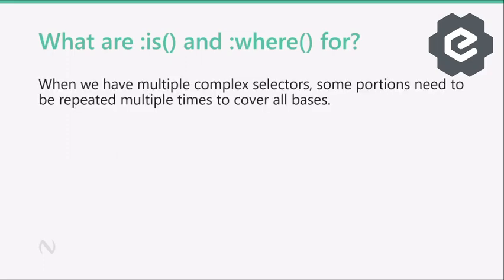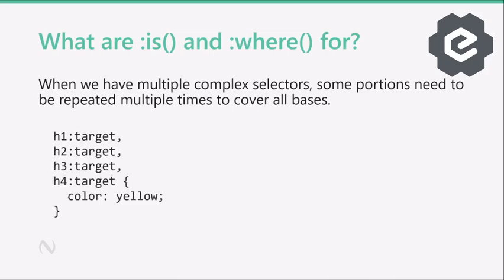So what are these two selectors for? When we have multiple selectors, especially when they get pretty long, some portions need to be repeated multiple times to cover all bases. For example, if we have heading elements at different levels and each one has an ID, we can use the ID to navigate using the URL fragment. To highlight the heading text in a different color, we can use the `:target` pseudo-class. But if we want to apply the same style to all four heading levels, we have to write `h1:target`, `h2:target`, `h3:target`, and `h4:target` — repeating `:target` four times. And that's kind of clunky.